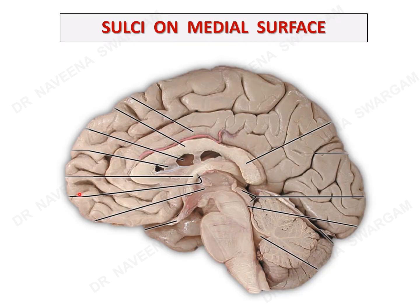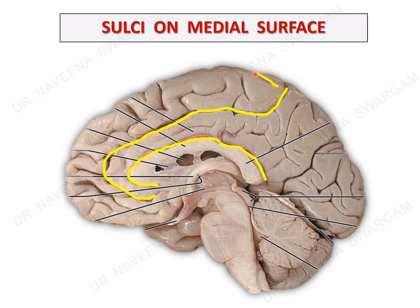Now let's learn the sulci and gyri on the medial surface. A sulcus running just above the corpus callosum is known as the callosal sulcus. Above the callosal sulcus, the frontal lobe shows a lengthier cingulate sulcus with a curved tip towards the superior border, lying close to the termination of the central sulcus. Near the orbital surface, the frontal lobe shows the parolfactory sulcus. The parietal lobe shows a horizontally placed subparietal sulcus. The occipital lobe is separated from the parietal lobe by the parieto-occipital sulcus, and the calcarine sulcus enters onto the superolateral surface by cutting through the occipital pole and meets the parieto-occipital sulcus at the inferomedial border.